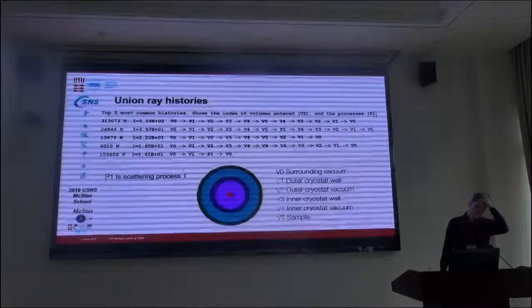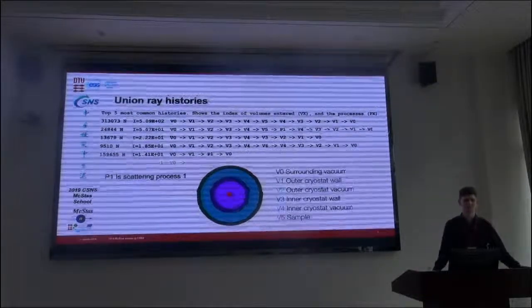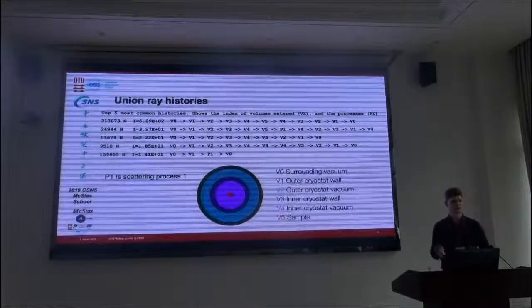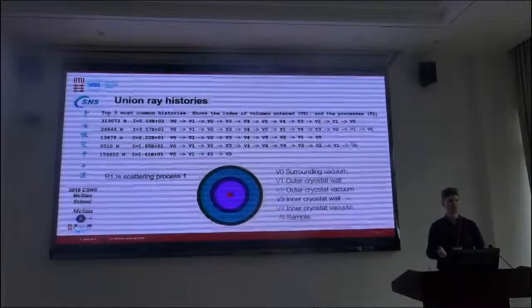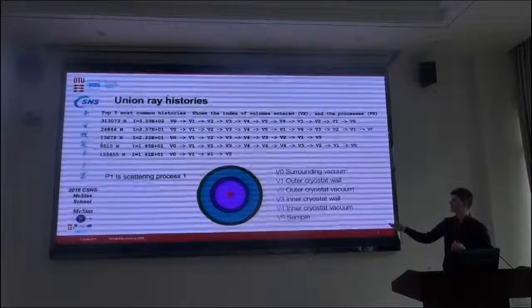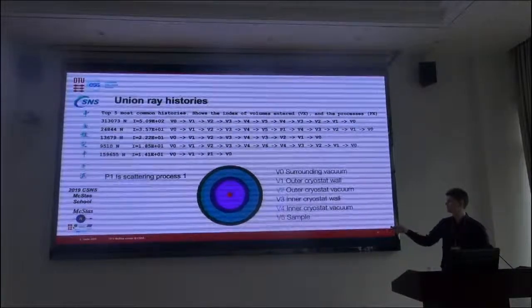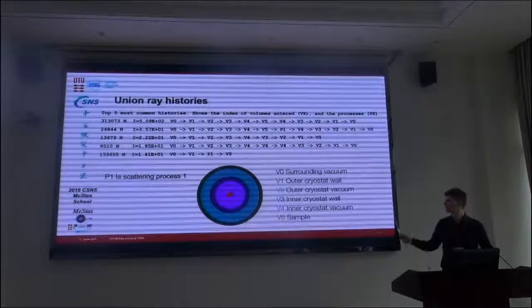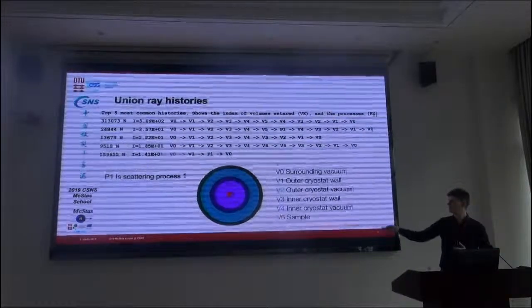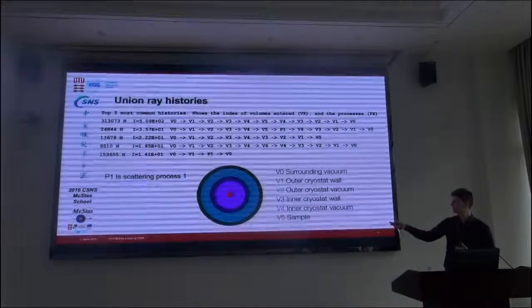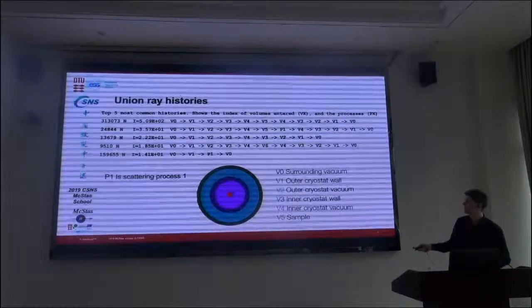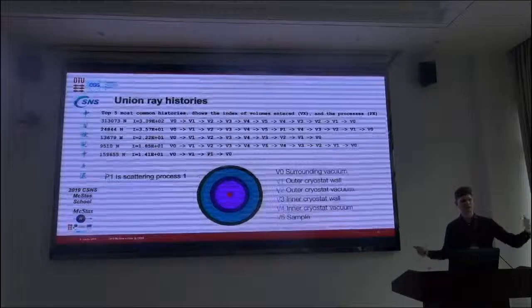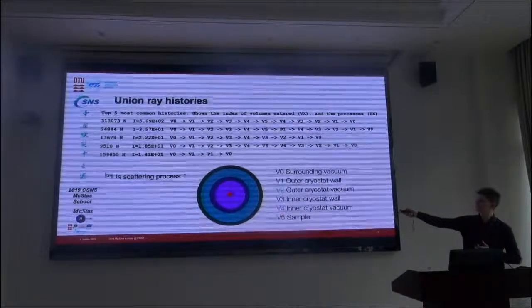Now, you might have noticed that every time in the terminal after you run the simulation, you get some text like this. And this is actually a primitive form of diagnostics, helping you understand what occurred in your simulation. And so it numbers the geometries that you have inserted with incrementing numbers. So the zero is always the surrounding vacuum around everything. And then, for example, my first one is the outer layer of the cryostat, then the vacuum, then the inner layer, and the inner vacuum, and then the sample. And then all the histories of a ray moving to one volume, scattering moving to the next, and grouped together and sorted. So we see the most frequent one at the top.